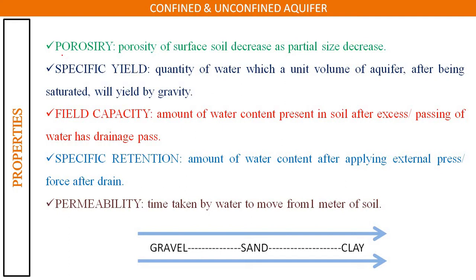First is porosity. The porosity of surface soil decreases as the particle size decreases.